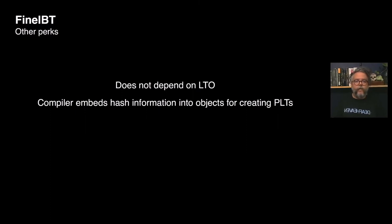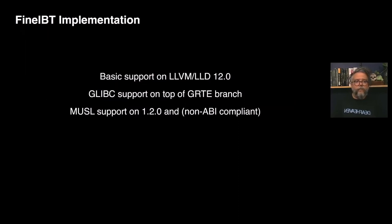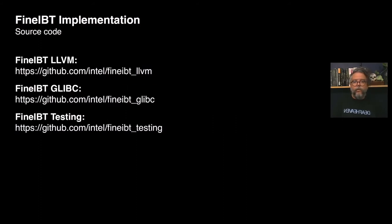When generating PLTs, the FineIBT linker needs information regarding the hashes with which it needs to instrument the entries. For enabling that without depending on LTO, the FineIBT compiler embeds the required data in a special section on each generated object. When this data is consumed by the linker, it discards the sections with no impact to the final DSO size. FineIBT was implemented on top of LLVM and LLD 12.0. We implemented cross-DSO support on top of the Google Runtime Environment branch of glibc. We also wrote basic IBT support on Musl 1.2.0 for some performance tests. The source code of FineIBT is available in these repositories: the first being the compiler and linker implementation, the second a Clang-enabled version of glibc with FineIBT cross-DSO support, and the third a few scripts used for testing.